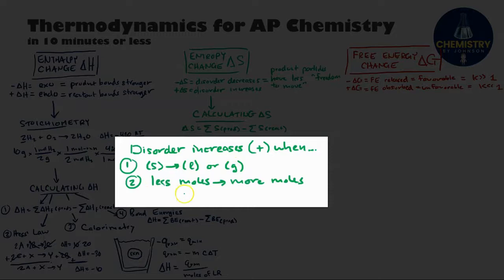If there is no phase change between the reactants and products, then you can look at the quantities of moles. If there's fewer moles in the reactants and more moles in the products, that's an increase in disorder too.